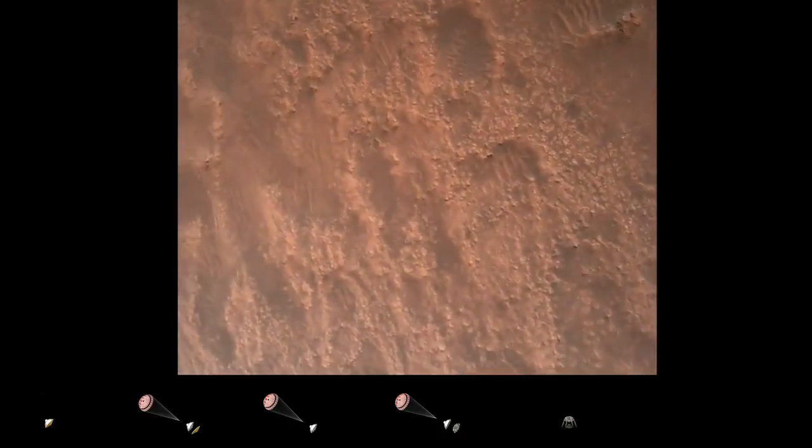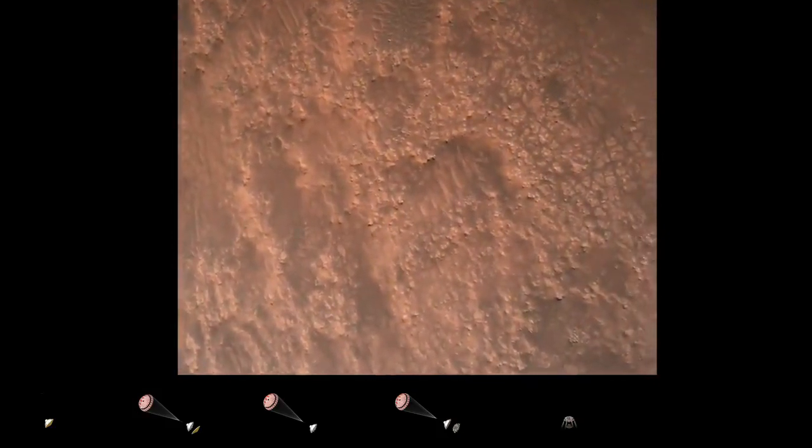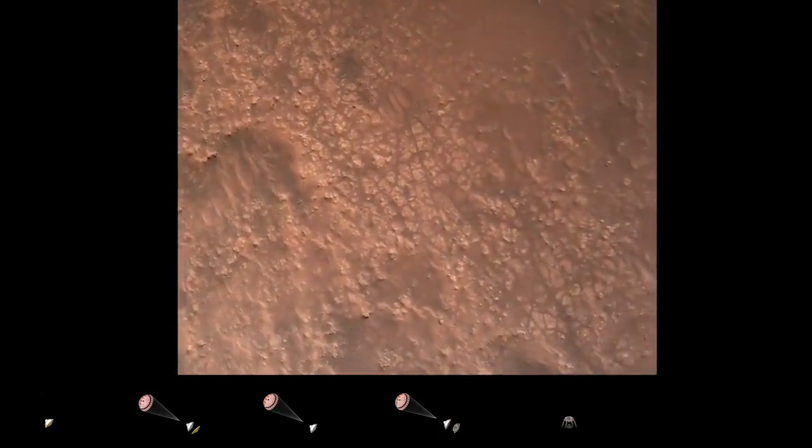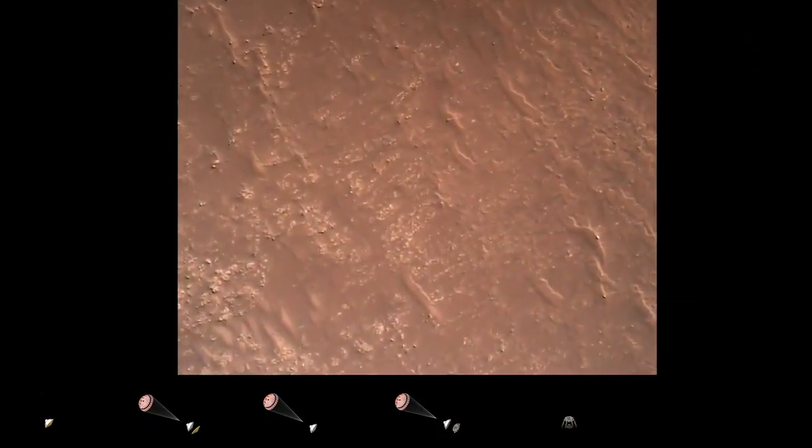TRN safety bravo. We have completed our terrain relative navigation. Current speed is about 30 meters per second. Altitude of about 300 meters off the surface of Mars.